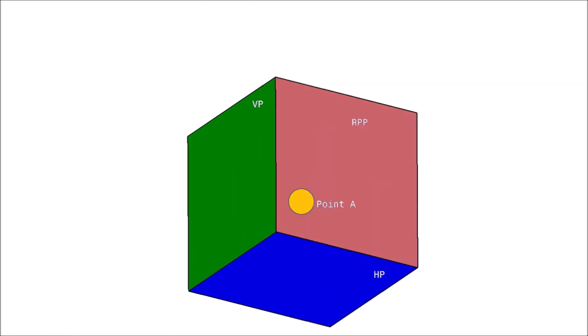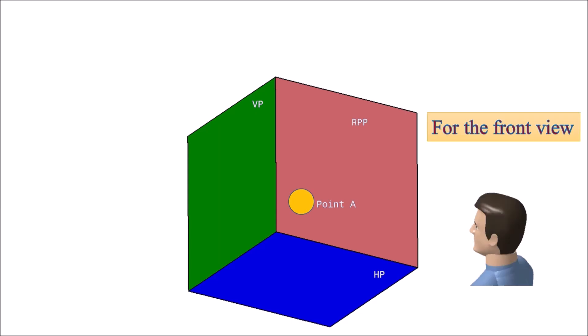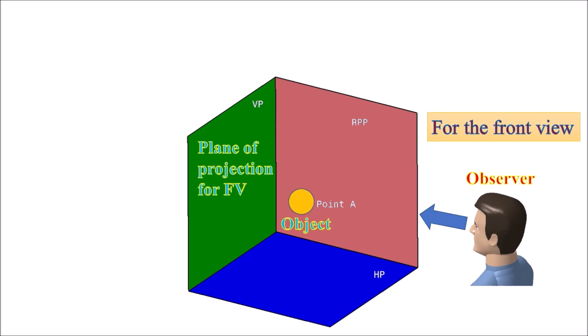The object is point A. In the first quadrant, the object always lies between the observer and the plane of projection. For example, to capture the front view, the observer will be here, the point object here, and the plane of projection — the vertical plane VP — here.